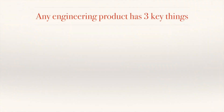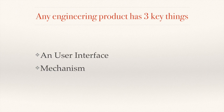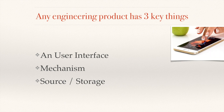Any engineering product has three key things: a user interface, a mechanism, and a source or storage. Let's talk about this device — this is a mobile, and this is actually the screen of your mobile. This is called a user interface because by using this screen you are going to interact with the mobile or with the system. It has some nice little buttons by using which you can give inputs.